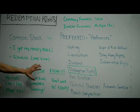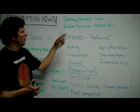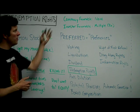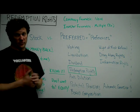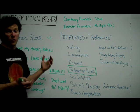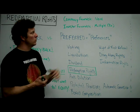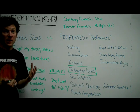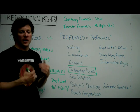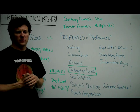Before talking about when you might do this, let's look at company-favorable and investor-favorable situations. A company-favorable situation would be there is no redemption right — preferred stock shareholders simply can't do this, so the company doesn't have to worry about it. An investor-favorable situation would be a multiple: not only do I get my money back, I get two or three times my money back. There are plenty of options in between those two.